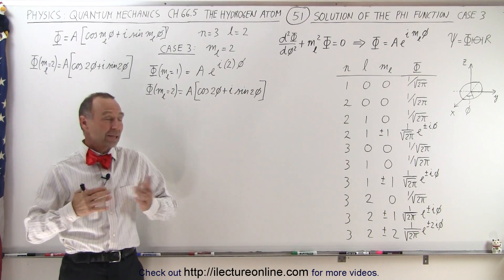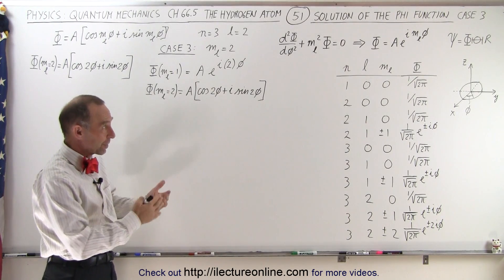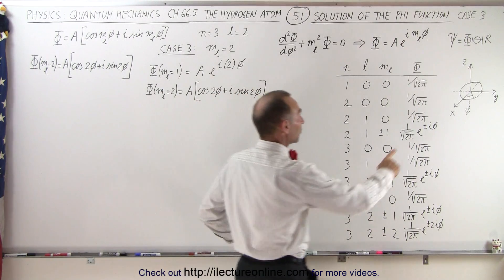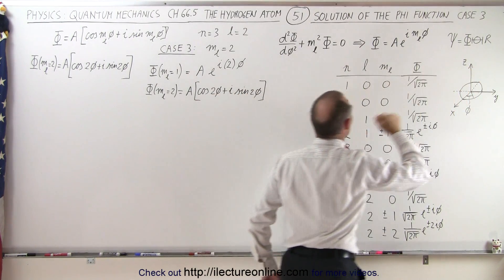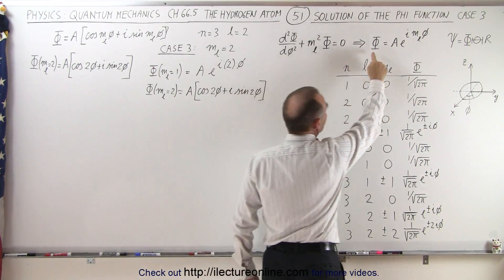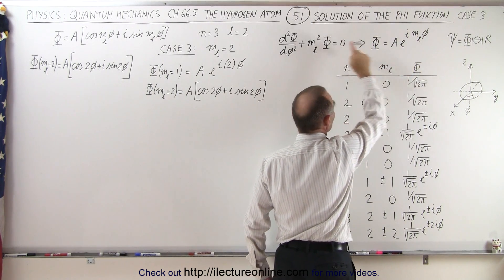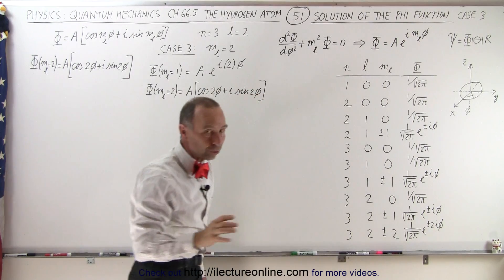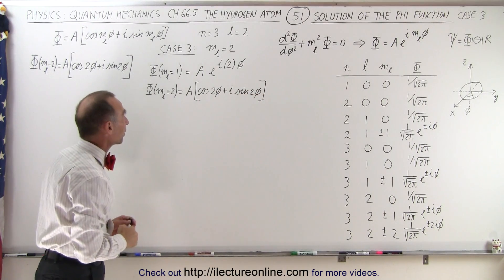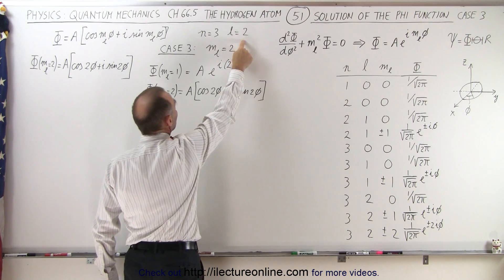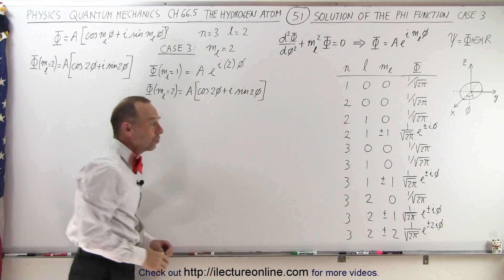Welcome to ElectronLine. Now here we're going to look at what we call case 3. We're still working on the azimuthal part of the solution, but now we're going to find the exact form of the general solution to our differential equation for the azimuthal portion of the Schrödinger equation. So now we're going to let n equals 3, l equals 2, and m sub l equals 2.